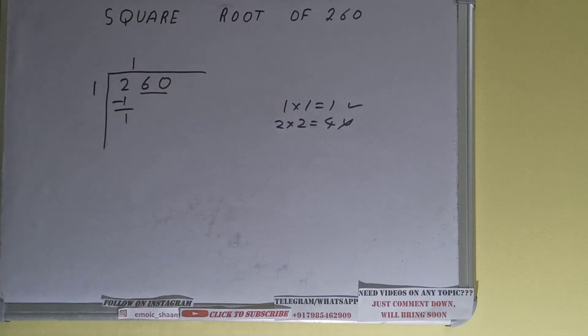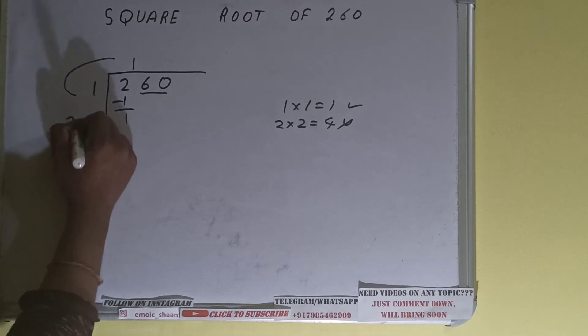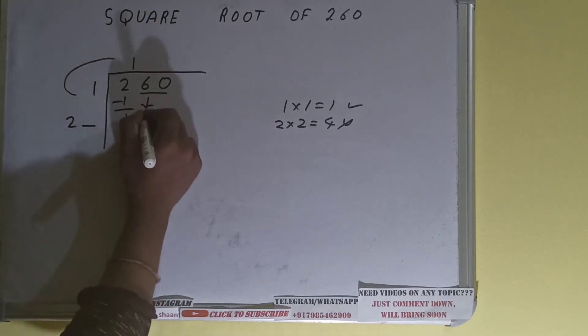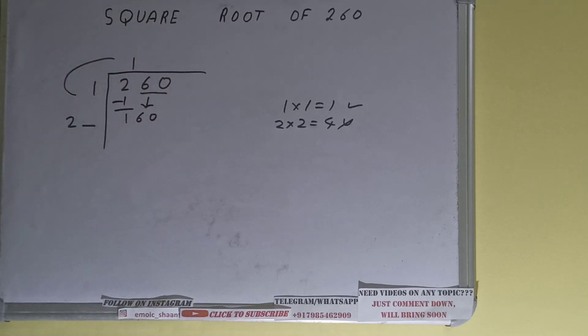We'll be having one. Now we did one into one right, so one plus one will be two. Write it over here and keep one digit extra. We need to make this number big so that we can divide, so bring the next pair down and it will become 160.